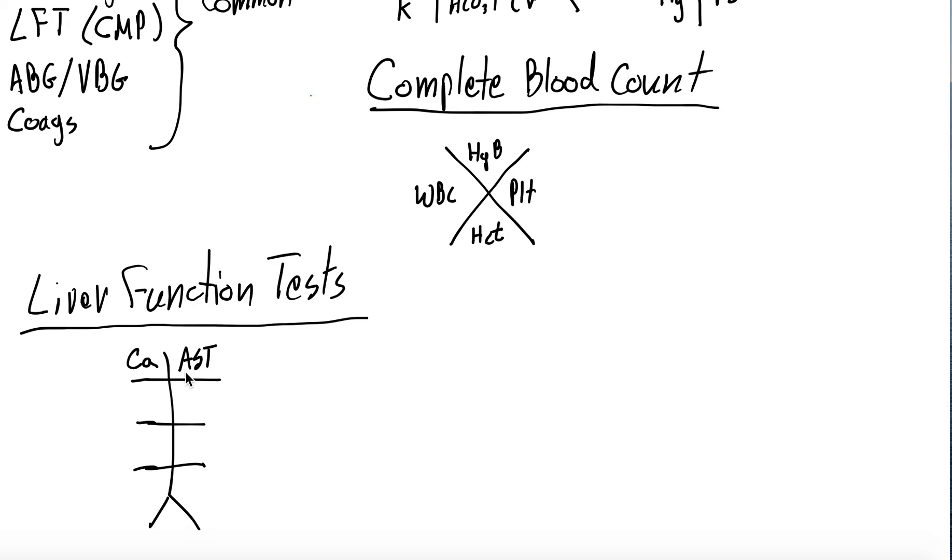You have the AST, aspartate aminotransferase, ALT, alanine aminotransferase. You have protein levels, albumin levels, alkaline phosphatase. And then here you have the bilirubin. So that is liver function test plus calcium.